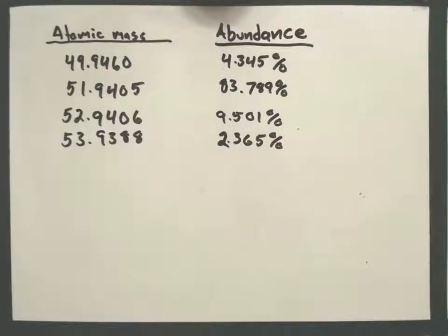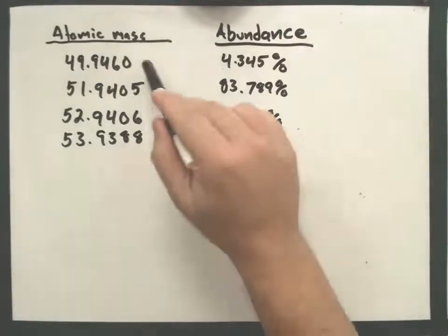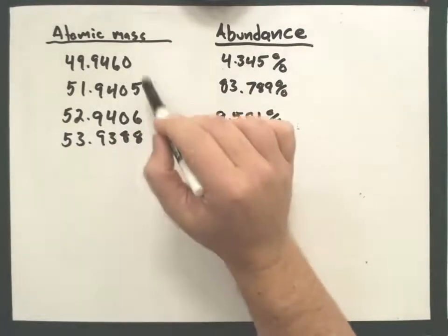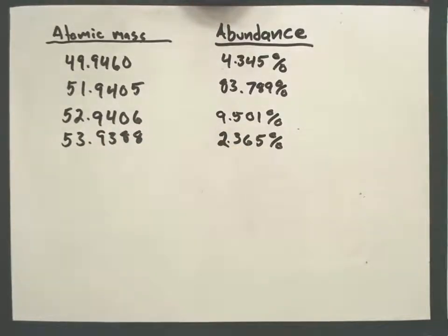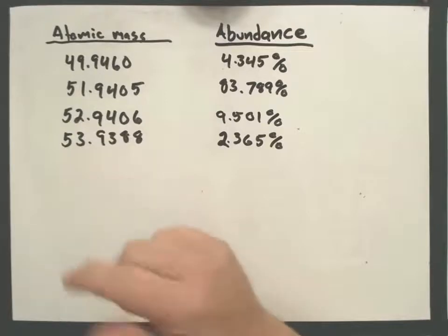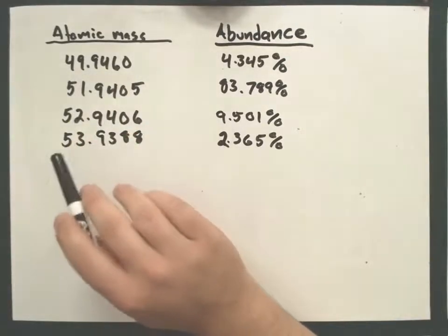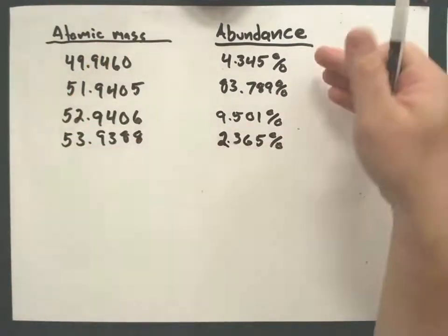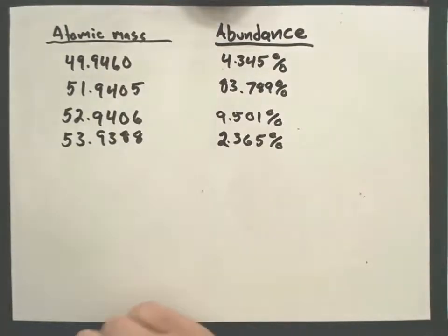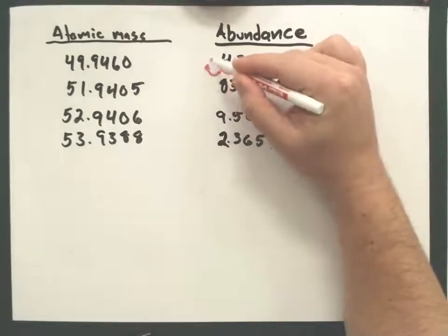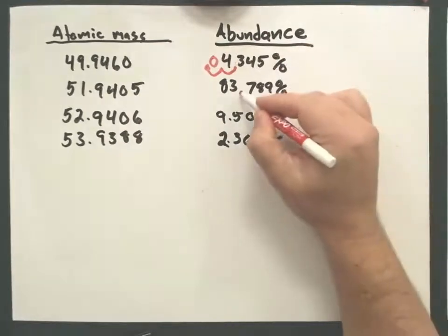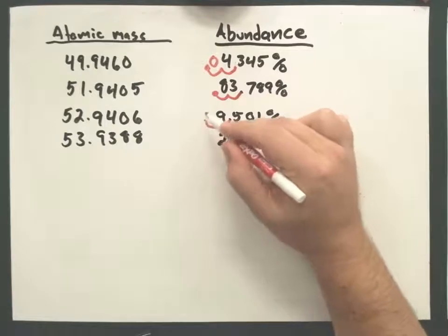Now for another example. These isotope masses are given in AMUs — atomic mass units — which are the actual masses, not the relative masses, so they won't be whole numbers. Don't be freaked out by that. The abundances are given as percents, so the first thing I need to do is move the decimal two places for each one: giving me 0.04345, 0.83789, 0.09501, and 0.02365.